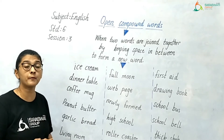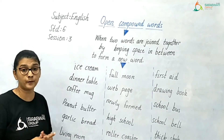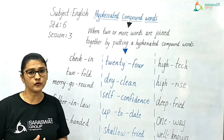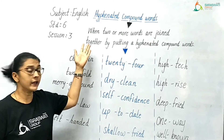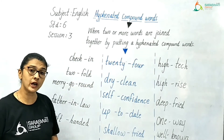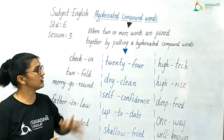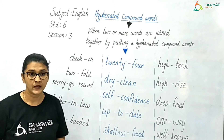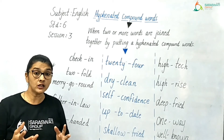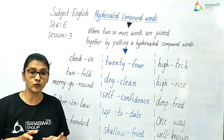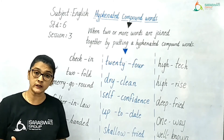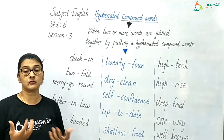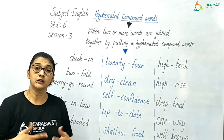Now let us see the third type of compound word: hyphenated compound words. Hyphenated compound words are when two or more words are joined together by putting a hyphen in between the words. Just as in the previous two types, the separate words have their own meaning, but when joined with a hyphen they create a different combined meaning.